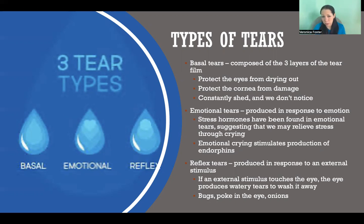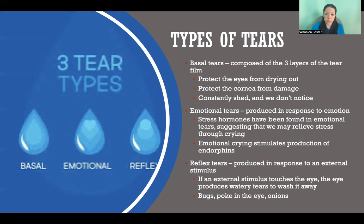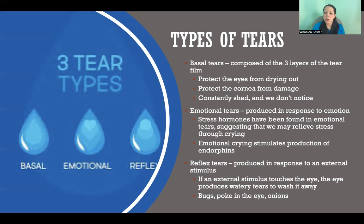Not only stress hormones, but studies have found different types of hormones and chemicals present in tears depending on the type of emotion being expressed through crying. Emotional crying has also been found to stimulate production of endorphins, which is probably part of why we feel better after we've had a good cry.